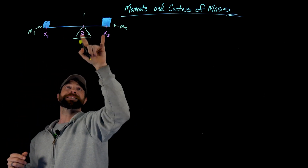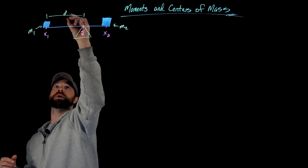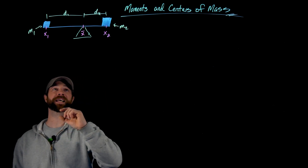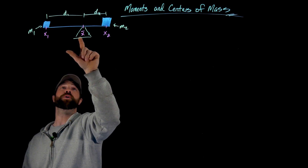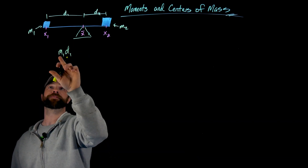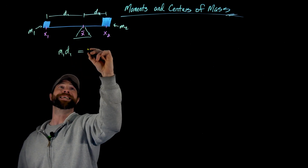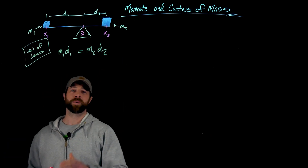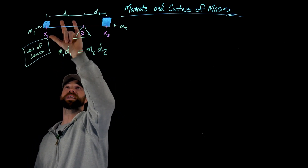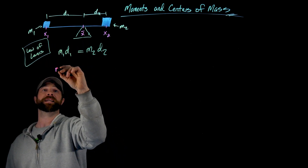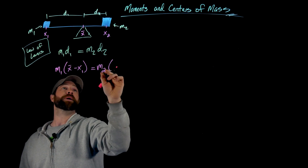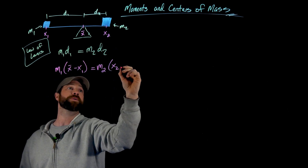We'll call these distances d1 and d2 from x-bar. In this teeter-totter situation, the law of levers tells us that the mass times the distance to the fulcrum point — this center of mass x-bar — is equal on both sides. Meaning m1 times d1 equals m2 times d2. Now d1 is simply x-bar minus x1, so we can rewrite this as m1 times (x-bar minus x1) equals m2 times (x2 minus x-bar), since x2 is greater than x-bar.